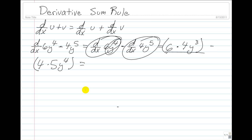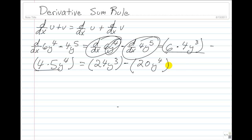Here we multiply 6 times 4 and get 24y to the 3rd, minus — we multiply 4 times 5 and get 20y to the 4th. So our final answer is 24y to the 3rd minus 20y to the 4th.